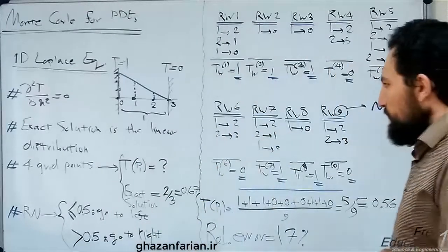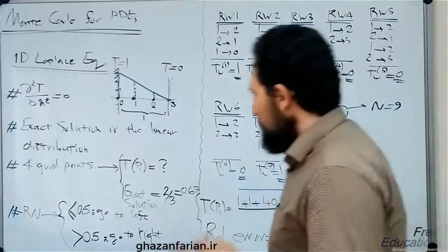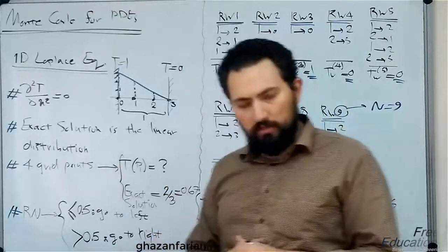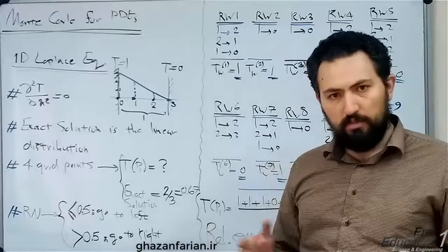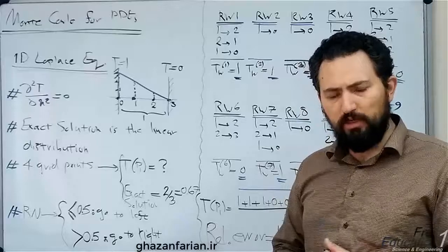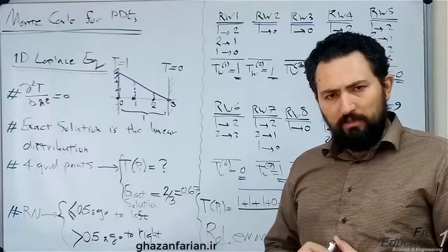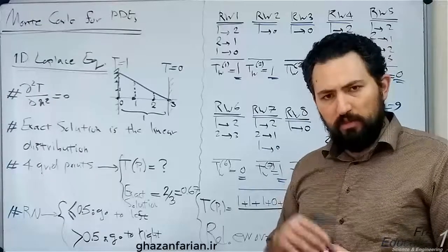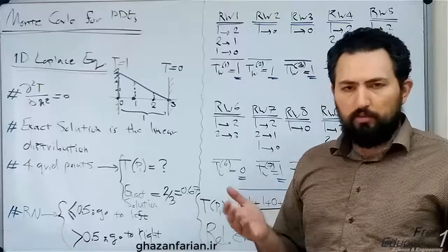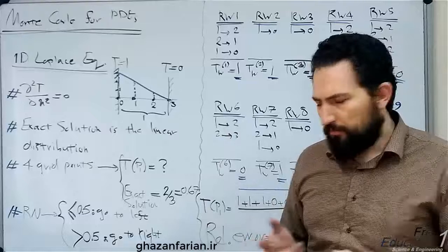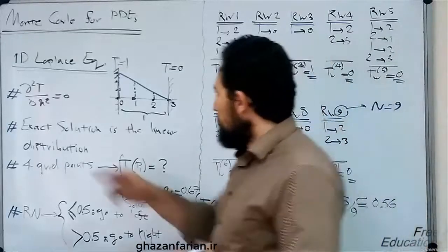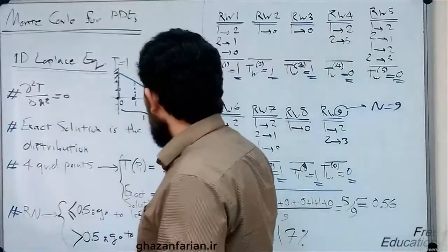We have three steps. The first step is to discretize the equation, the next step is to perform the random walk, and the third step is to compute the temperature at your desired point. This is the governing equation.